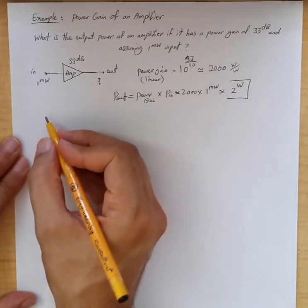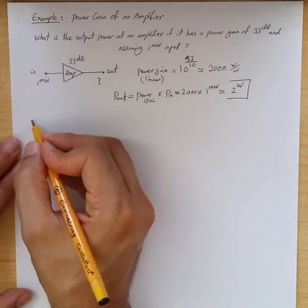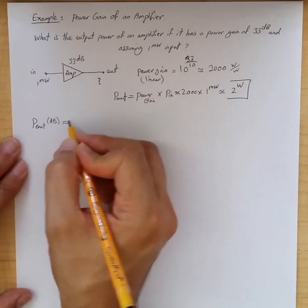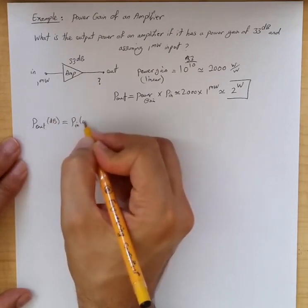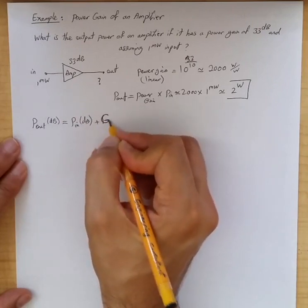You can also do this in dB domain. By doing that, we just know that output power in dB is equal to input power in dB plus the power gain in dB.